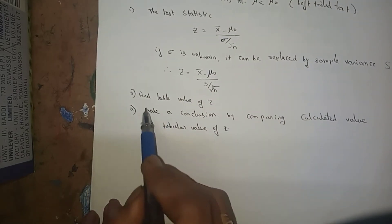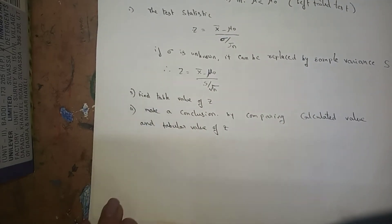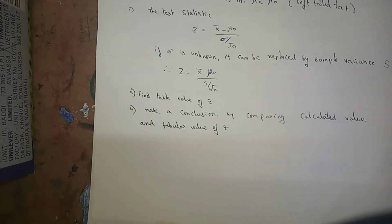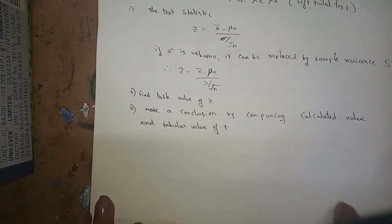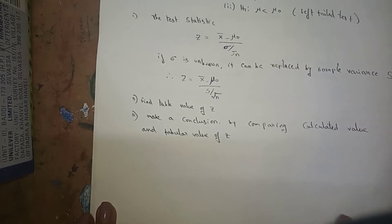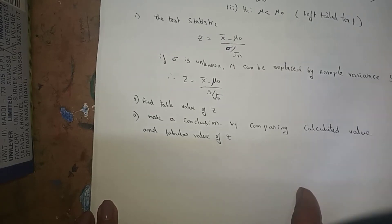The next step is to find the table value of Z. After calculating the test statistic, compare the calculated value with the table value and write the conclusion.